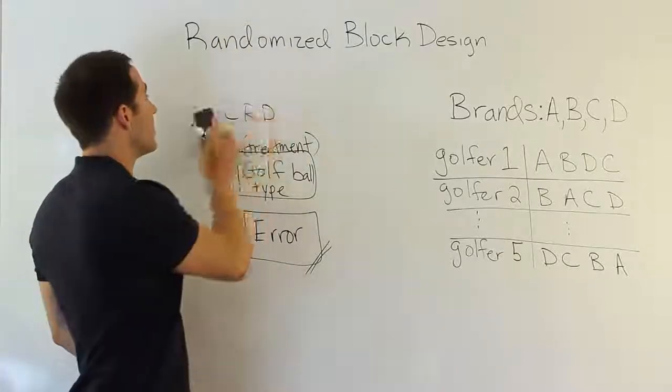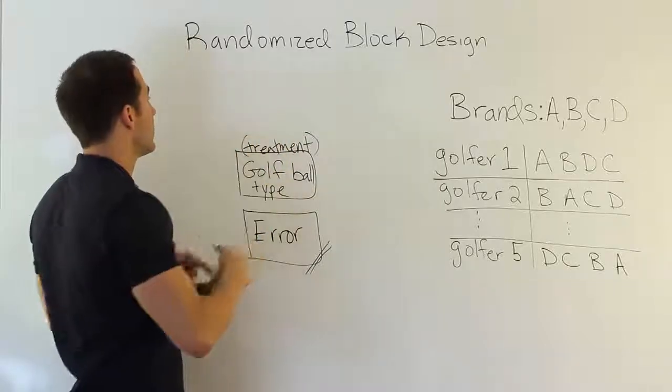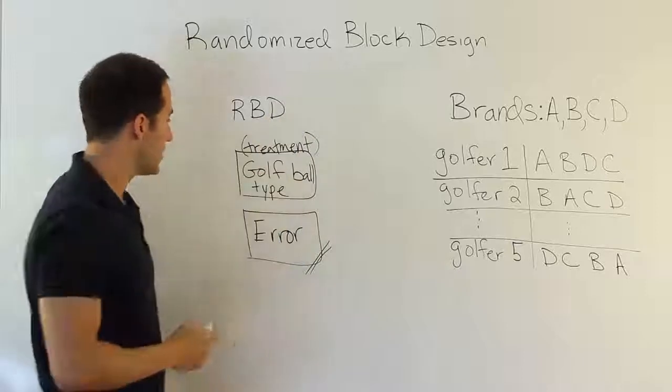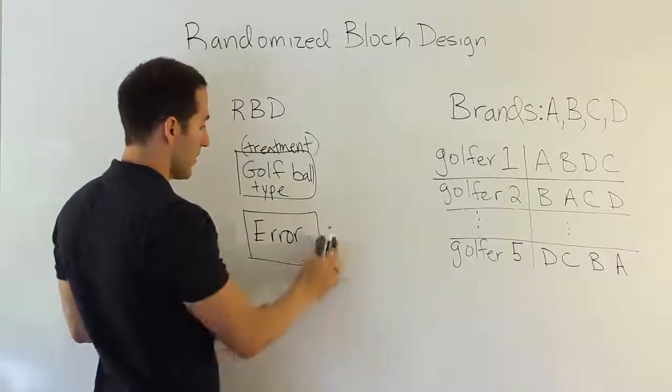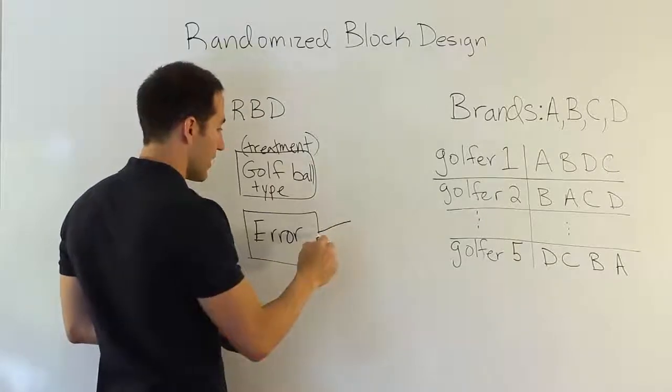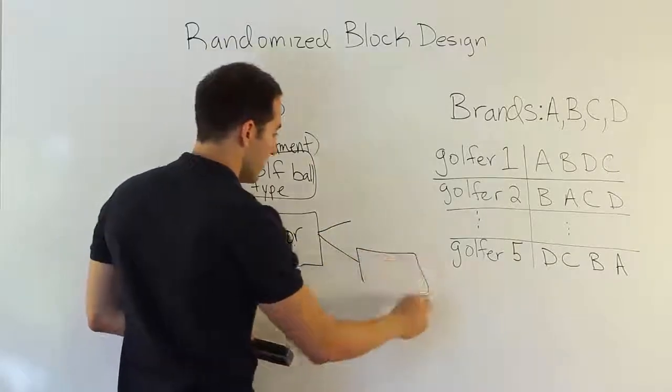When we switch over from completely randomized design to the randomized block design, what we're able to do using that procedure is to take this error term and split it up one more time. We'll take that and say, let's break that down into two things.